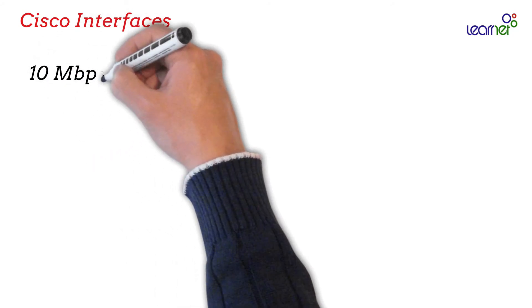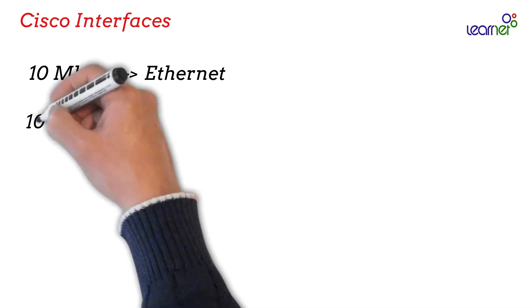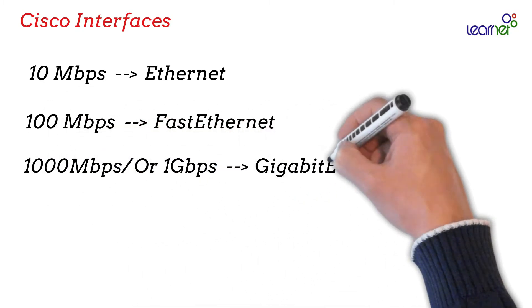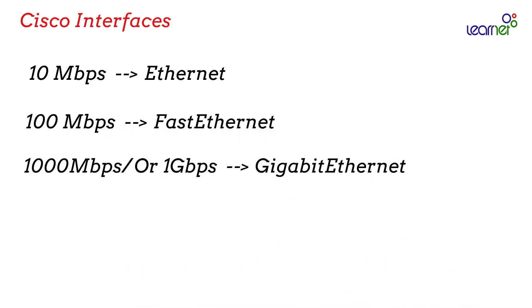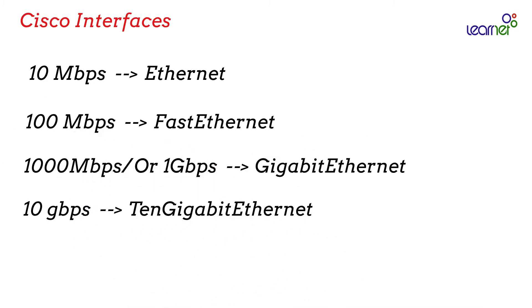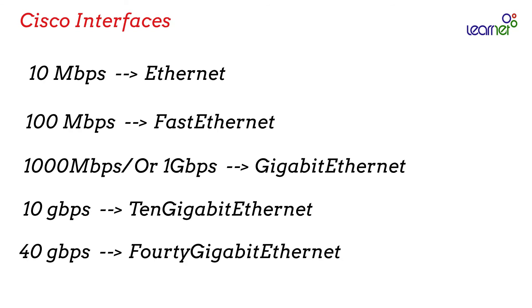Now the question is: how should we refer to these interfaces in the CLI? Cisco has a naming convention for different types of Ethernet interfaces: 'Ethernet' for 10 megabits per second interfaces, 'Fast Ethernet' for 100 megabits per second, 'Gigabit Ethernet' for 1000 megabits per second or 1 gigabit per second interfaces, '10 Gigabit Ethernet' for 10 gigabit per second interfaces, '40 Gigabit Ethernet' for 40 gigabit per second interfaces, and so on.